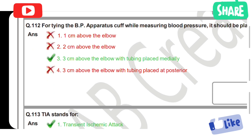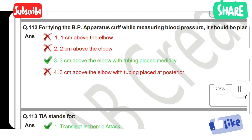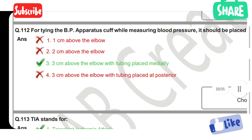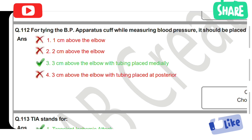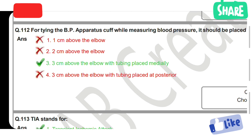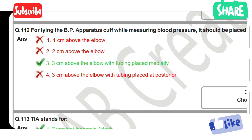For tying the BP apparatus cuff while measuring blood pressure, it should be placed: Option 1: 1 cm above the elbow. Option 2: 2 cm above the elbow. Option 3: 3 cm above the elbow with tubing placed medially. Option 4: 3 cm above the elbow with tubing placed posteriorly. Option 3 is the correct answer — 3 cm above the elbow with tubing placed medially.